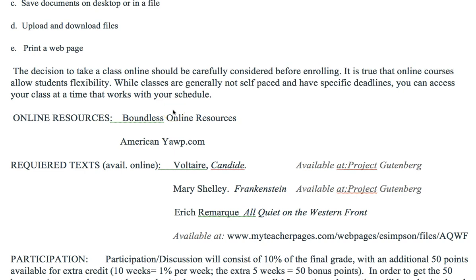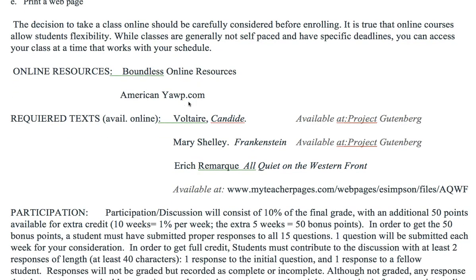Our online resources consist of a couple of open-source websites. One is called the Lumen Learning Center, which houses the Boundless Online Resource Materials. Secondly, there's another website called American Yawp, which can provide some additional information on topics not covered adequately in the Boundless Materials. As part of our writing assignments, there are three required readings. The first is a book by Voltaire entitled Candide. That is available both in print as well as online — I recommend accessing Project Gutenberg. Our second book for section two is Frankenstein by Mary Shelley, also available at Project Gutenberg, as well as in print at many libraries and discount booksellers.